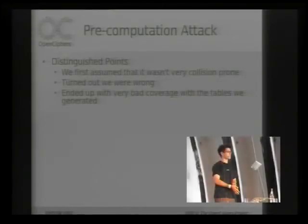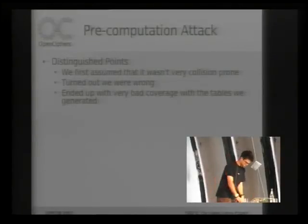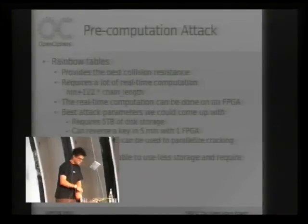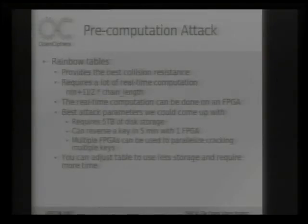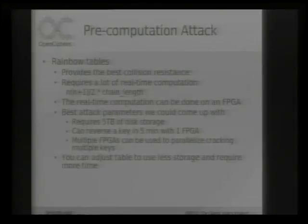At first we tried to use distinguished points because it's a lot faster than rainbow tables. We assumed A5/1 wasn't very collision-prone, but it turned out to be super collision-prone, so we scrapped that. We tried a rainbow table implementation, and what we ended up with is a table that takes about five terabytes of disk storage. Theoretically, with one FPGA, you'll be able to reverse the key in about five to ten minutes, and you can use multiple FPGAs to parallelize the cracking and make it faster.